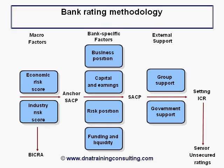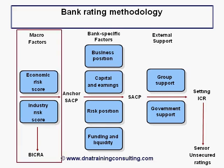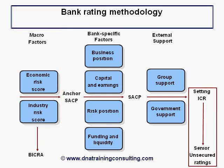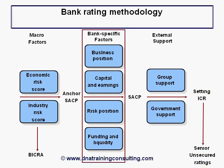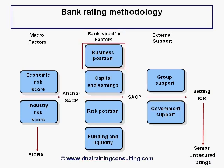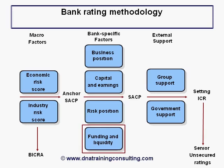We first reproduce the diagram from Chapter 1, which lays out the progression from the BICRA score to the issuer credit rating and senior unsecured ratings, and remind you that the next part of this progression is the incorporation of bank-specific factors. The four bank-specific factors are business position, capital and earnings, risk position, and funding and liquidity.